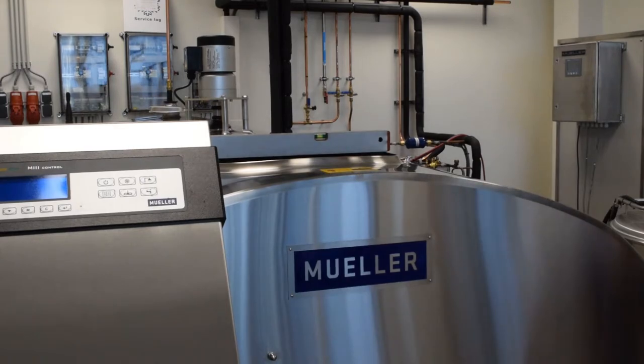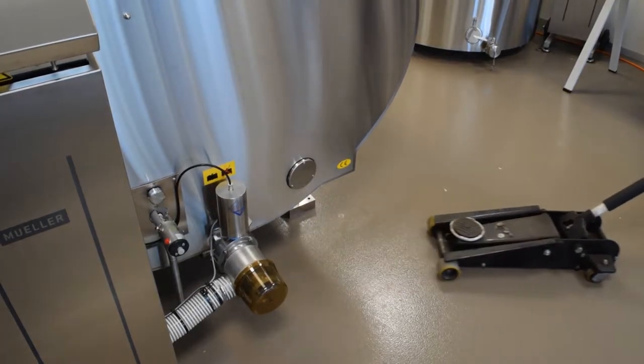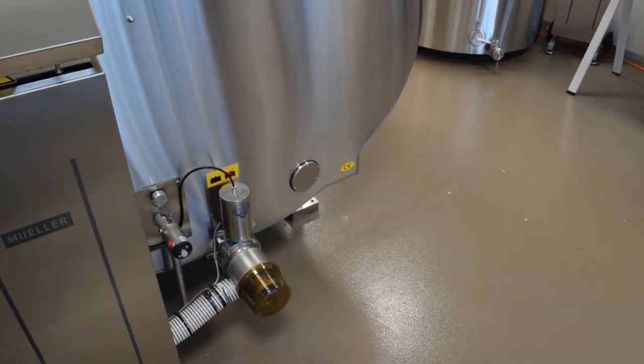Therefore, a spirit level is used and placed on the manhole. When necessary, jack the tank up and turn the front legs in or out to make the tank horizontal. After this is done, you can remove the jack.